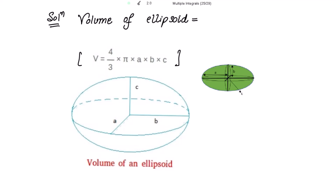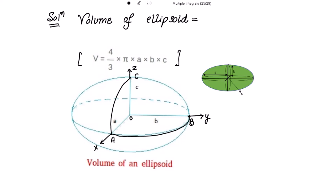When we talk about the positive octant, let me draw here. This is the origin. Let this be the x-axis, this be the y-axis, and this be the z-axis. Let this point be A, this point be B, and this point be C. Now joining these points gives us the positive octant region OABC.